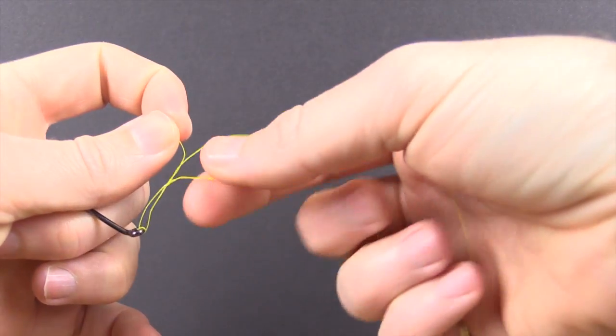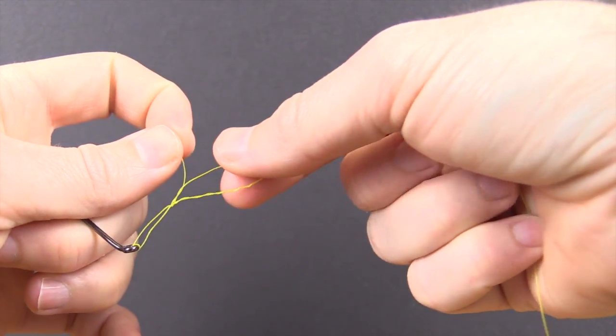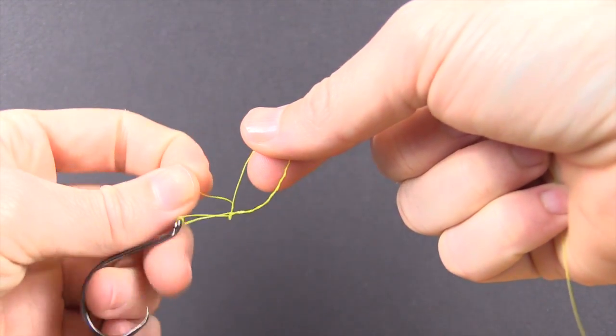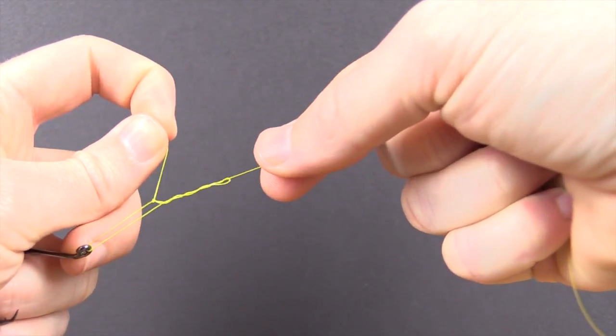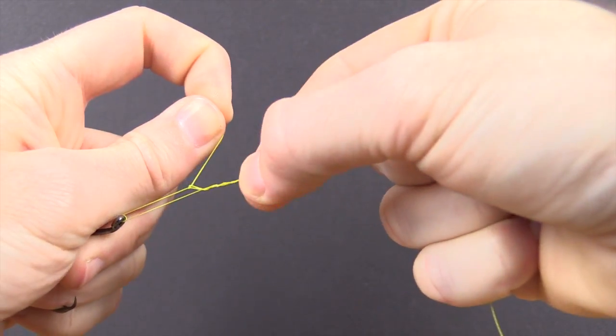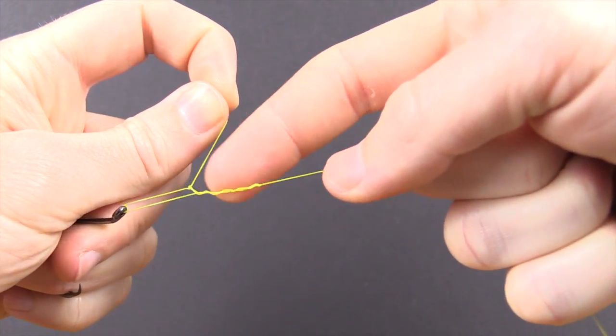So what we did again, we went through the first loop, and you can kind of see it here, and then in that loop that we just created, we went through that one. So now you can pull it tight, and in doing so, pull up on the tag end slowly, just to make sure that it's all nice and comes down in a nice form.